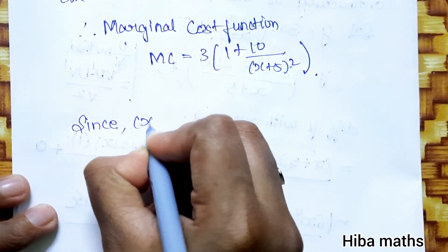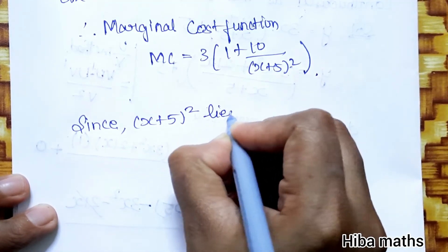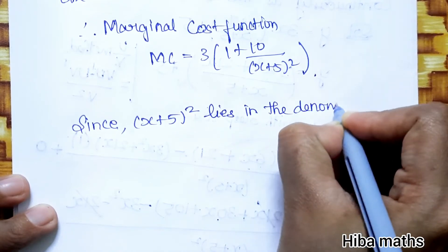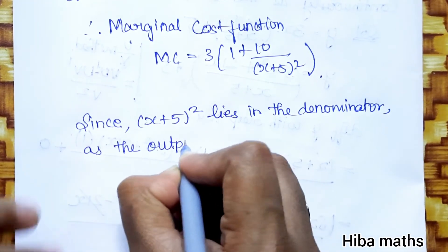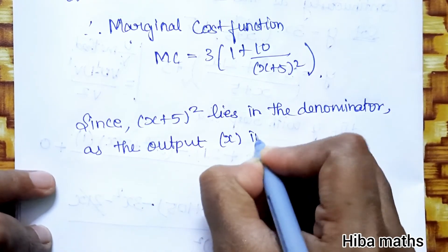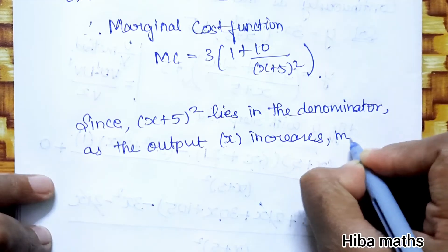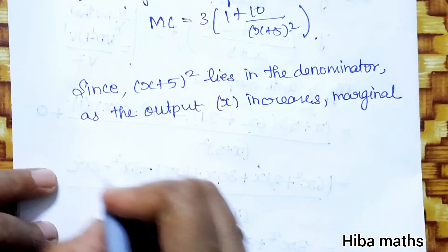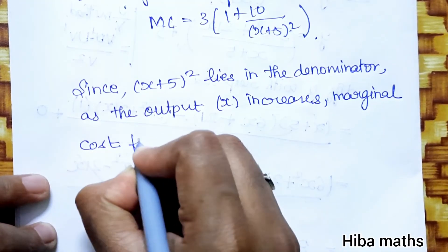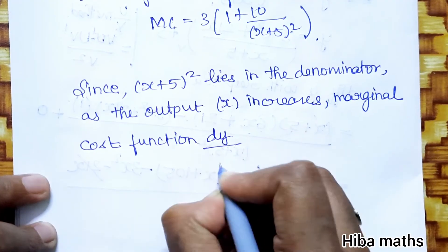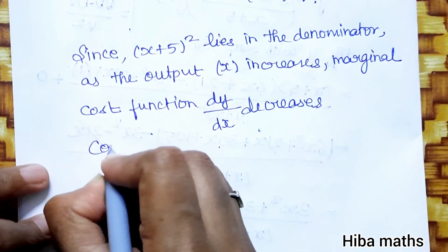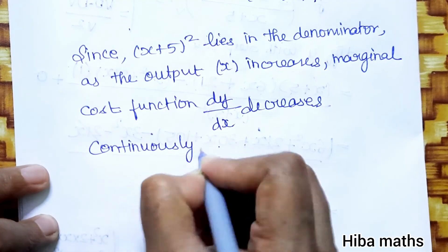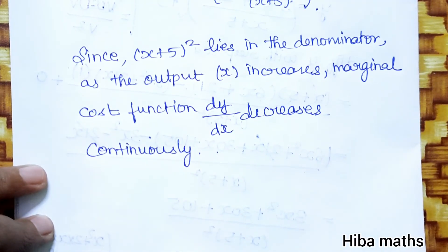Since (x plus 5) whole squared lies in the denominator, as the output x increases, the marginal cost function dy/dx decreases continuously. Thank you so much for watching.